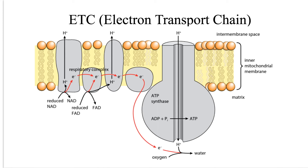In all the stages of aerobic respiration, including glycolysis, the link reaction, and the Krebs cycle, hydrogen atoms are split and are carried by electron carriers. The most important contribution of the Krebs cycle to the cell's energetics is the release of hydrogens, which can be used in oxidative phosphorylation to provide energy to make ATP. Reduced NADs produced in glycolysis, the link reaction, and the Krebs cycle, and reduced FADs produced in the Krebs cycle, are passed to the electron transport chain.